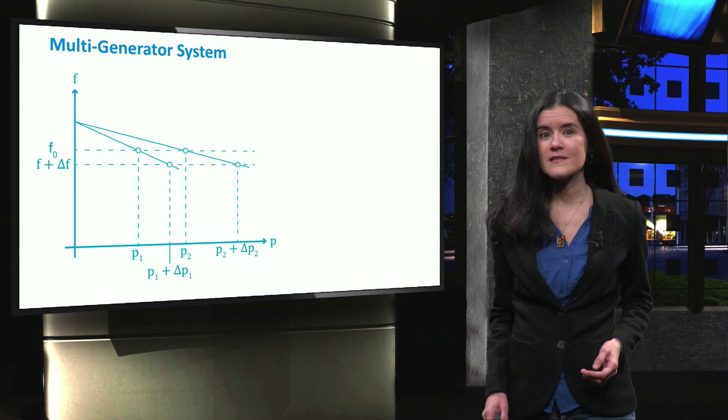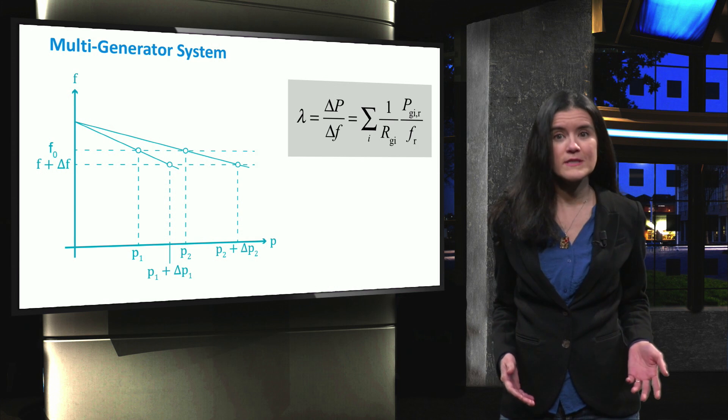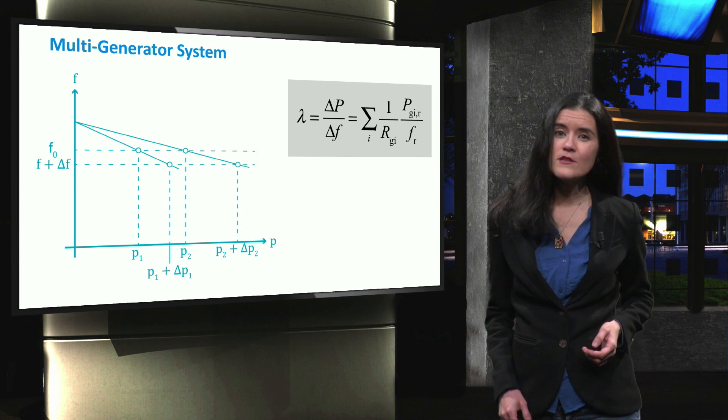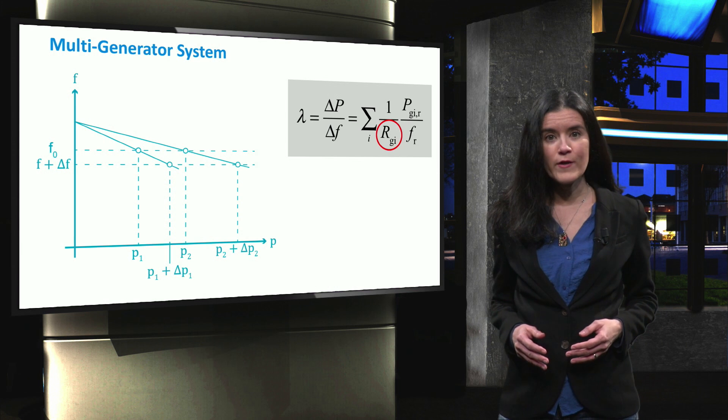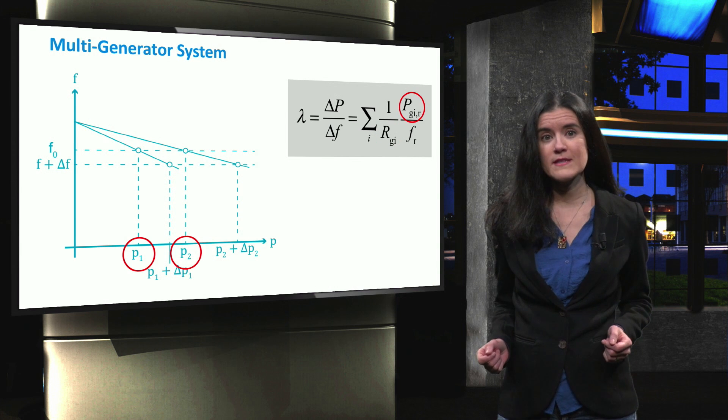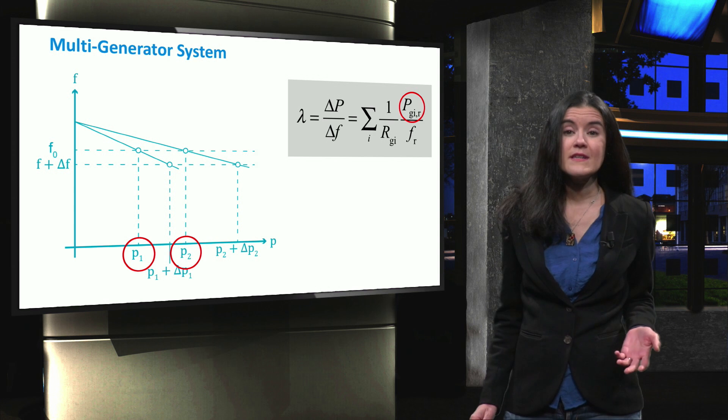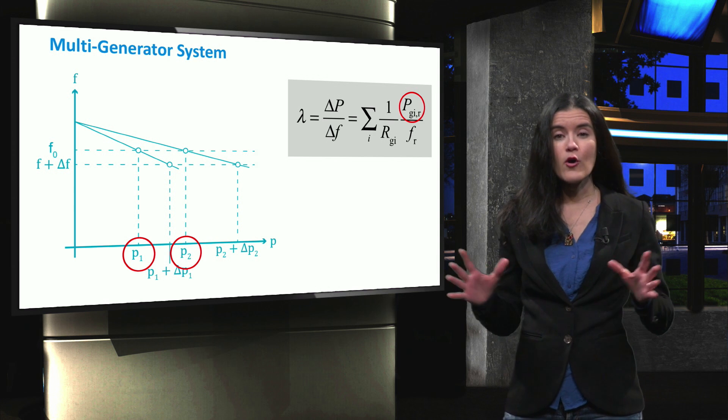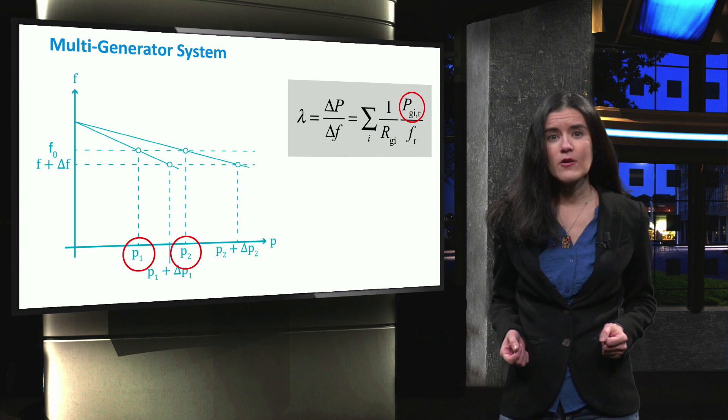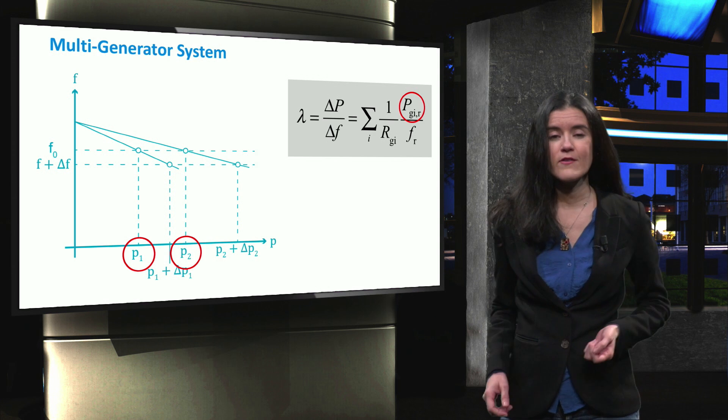For a multi-generator system, the network power frequency characteristic given by lambda is determined by the droop and the nominal rated power of all generators in the system. In this case, a change in active power consumption is met by all generators, given as the combination of all droops, as shown in the equation.